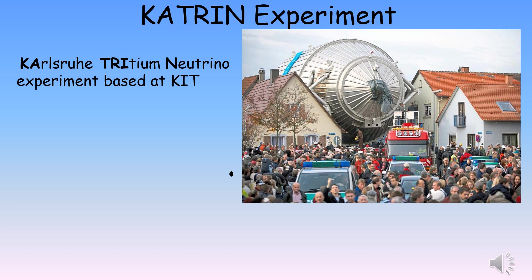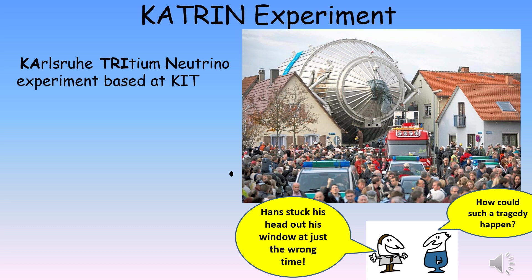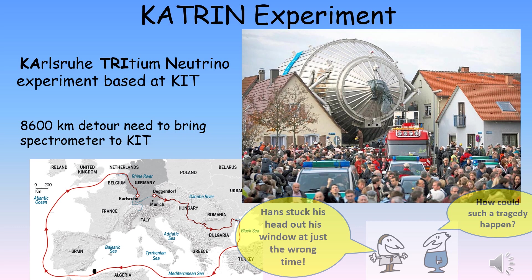The latest experiment to attempt a measurement of the neutrino mass, or at least a much reduced upper limit, is known as KATRIN, which is an international collaboration of 150 scientists, engineers, technicians, and students from five countries. KATRIN is based at KIT, the Karlsruhe Institute of Technology in Germany. The astonishing picture shows the main component of the experiment, the spectrometer, being hauled through a nearby town on the final leg of its journey to KIT after being fabricated in the town of Deggendorf, 413 kilometers away. Equally astonishing, the trip from Deggendorf to KIT required an 8,600-mile detour, mostly via ship, because German roads could not accommodate such a large piece of equipment.